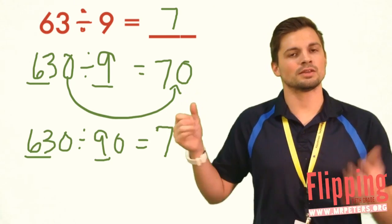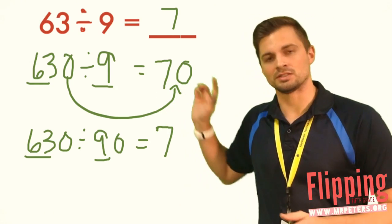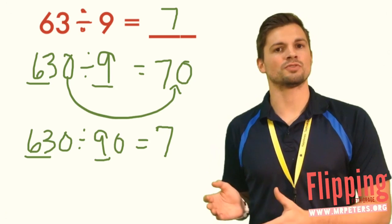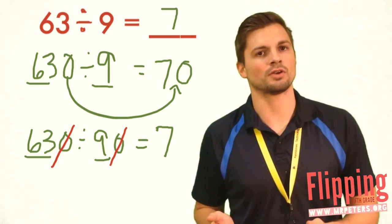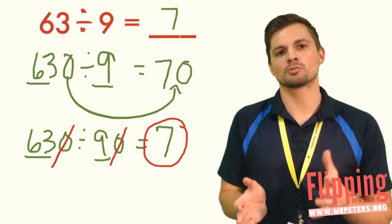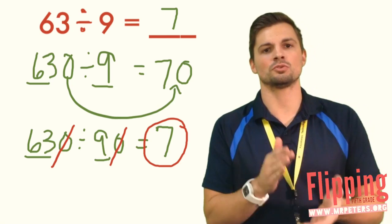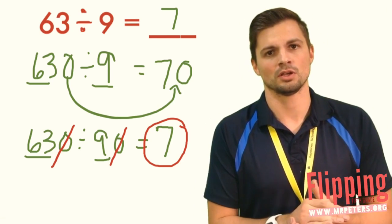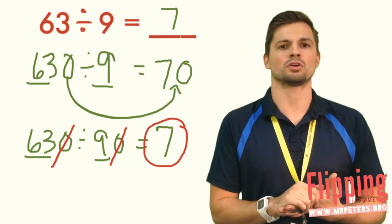Okay, so we underline our 63, we underline our 9. 63 divided by 9 again is going to give us 7. Now since there is a zero in my dividend and a zero in my divisor, they cancel each other out, so my answer is just 7. It's not like multiplication when you add them in. In division, those zeros can cancel out. So why don't you try a couple problems on your own?